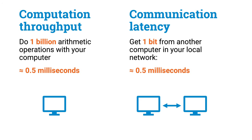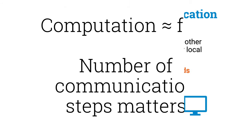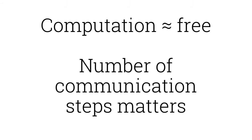It doesn't sound like much, until you check how many arithmetic operations your computer could do in half a millisecond. And even for your old desktop computer, the answer can be easily one billion. So to a first approximation, computation is basically free, and all that matters is the number of communication steps that we need. So an efficient algorithm for computer networks is an algorithm that takes as few communication steps as possible.